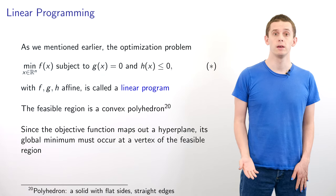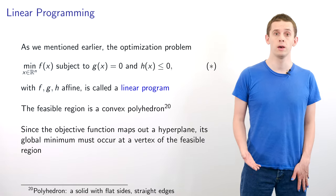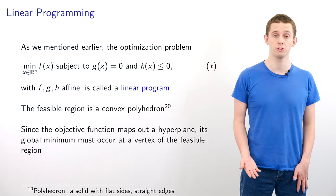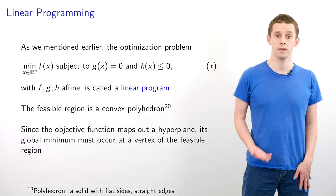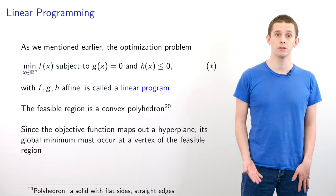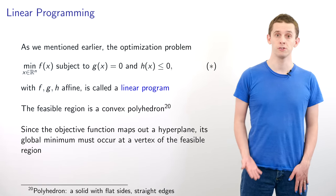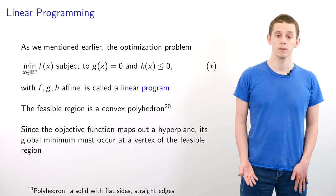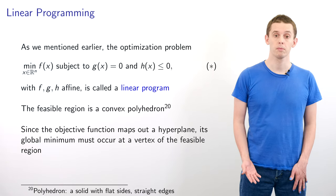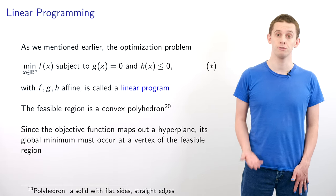Let's now briefly look at linear programming. Consider the optimization problem of minimizing f(x) subject to g(x) = 0 and h(x) ≤ 0, where f, g, and h are all affine — meaning linear plus a constant. This is called a linear program. Due to this special affine structure, important simplifications occur: the feasible region will be a convex polyhedron, and since the objective function maps a hyperplane, it can have no isolated local minima. Therefore its global minimum must occur at a vertex of the feasible region.